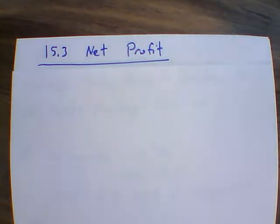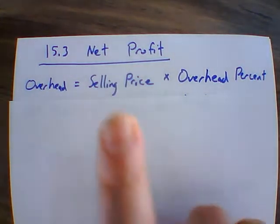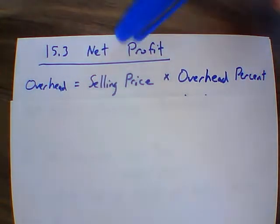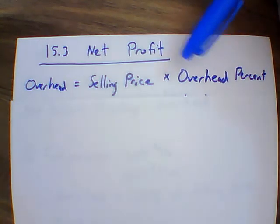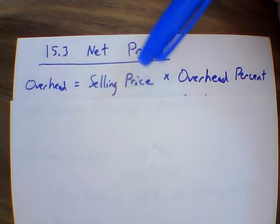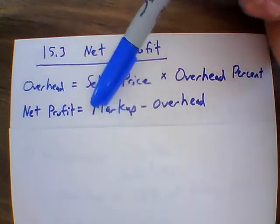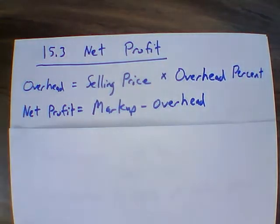To find overhead, one method is to take the selling price times the overhead percent. So if each product costs us twenty percent of the selling price in overhead, we're losing twenty percent of the selling price to overhead expenses. Then net profit equals markup minus overhead.